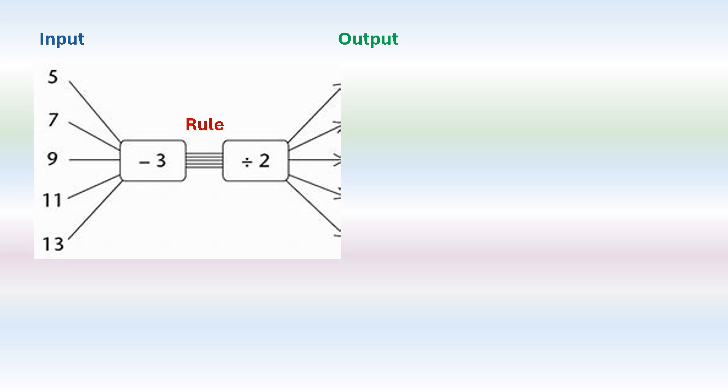So 5 minus 3 is 2, 2 divided by 2 is 1. 7 minus 3 is 4, 4 divided by 2 is 2. 9 minus 3 is 6, 6 divided by 2 is 3.